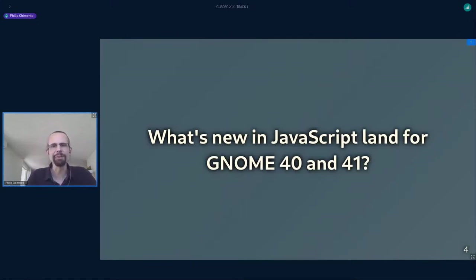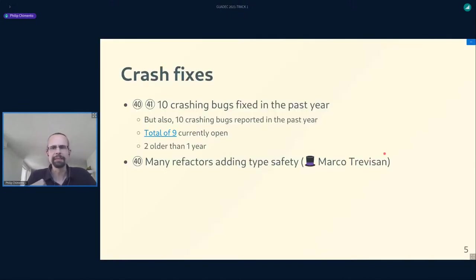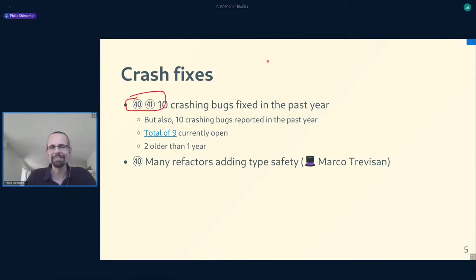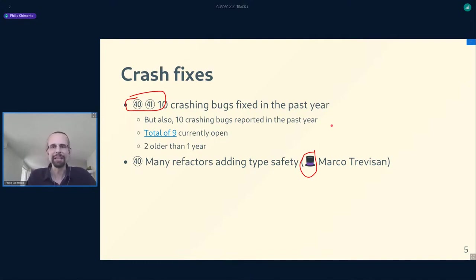Part one: what's new for GNOME 40 and the soon-to-be-released GNOME 41. On these slides I'll use little circled 40 and 41 icons to show things you can expect in those releases, and I'll tip my hat to the person who contributed each thing. First, we've fixed just as many crashing bugs as were reported in the past year, though that does mean we have the same number as we started with — but most of them are new, so we've cycled through them pretty quickly.